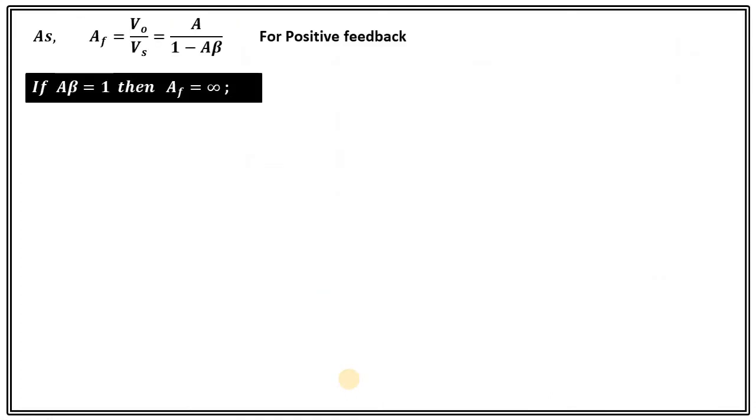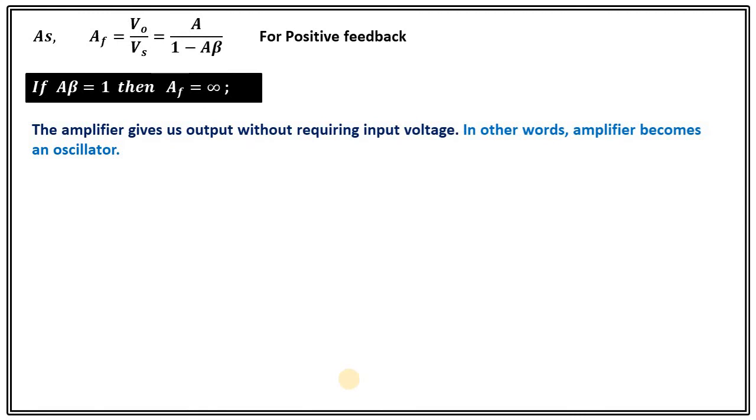If A beta is equals to 1 in that case AF will be infinity. What it means is that the amplifier gives us output without requiring input voltage. In other word amplifier become an oscillator. So this is very clear from this relation.